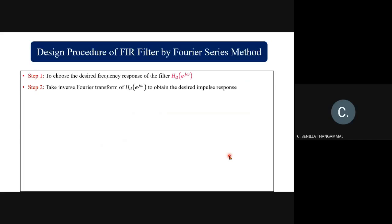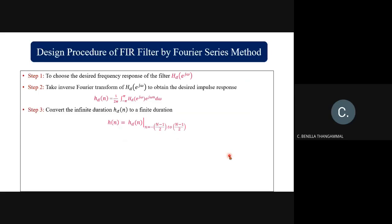Step two: take the inverse Fourier transform of Hd(e^(jω)) to obtain the desired impulse response hd(n), which is equal to (1/2π) integral from −π to +π of Hd(e^(jω)) · e^(jωn) · dω. Step three: convert the infinite duration hd(n) to a finite duration, where the finite duration will be from −(N−1)/2 to (N−1)/2, where capital N is the number of samples.